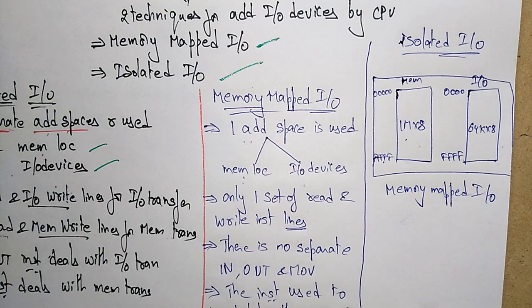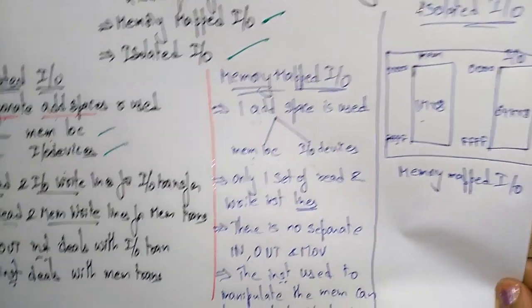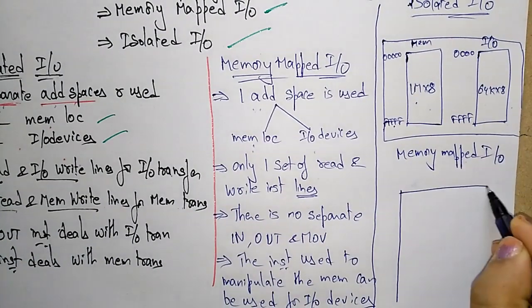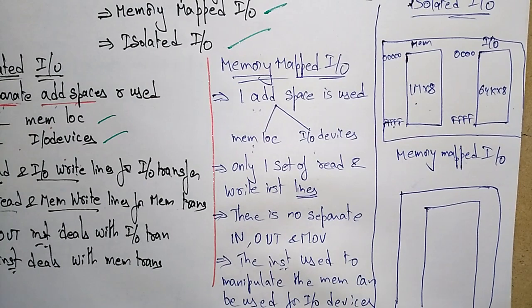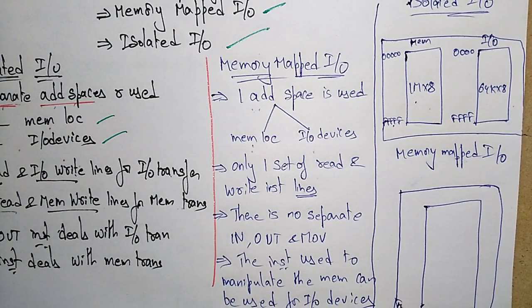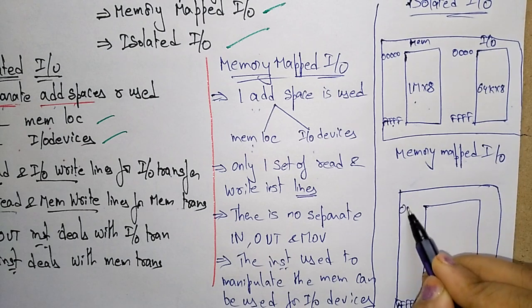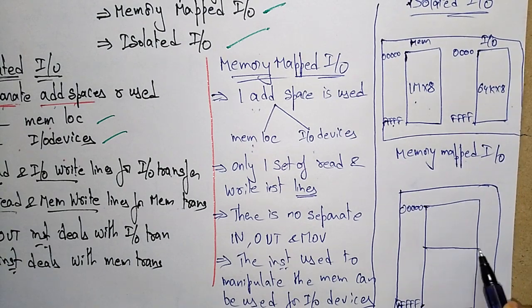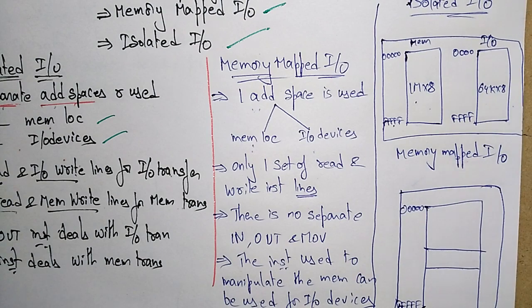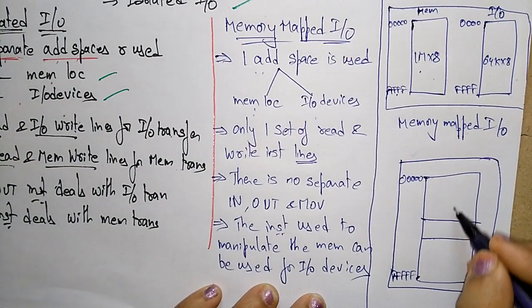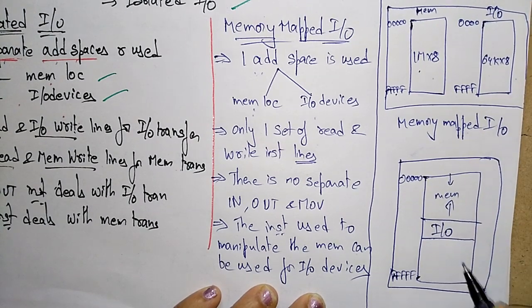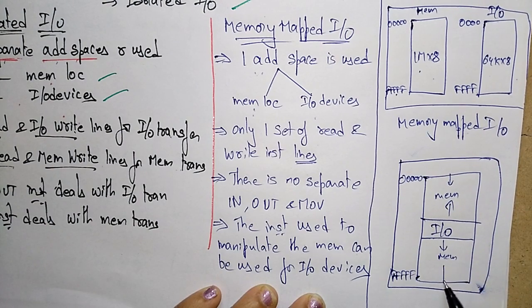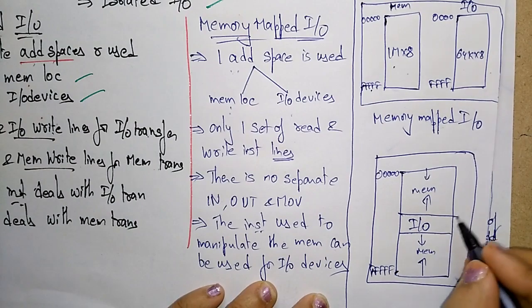Now coming to memory mapped I/O — in memory mapped I/O, we use only one address space. That single address space has to be allocated for both memory locations as well as I/O devices. The complete address space, from 0x00000000 to 0xFFFFFFFF, is used for both memory and I/O, with one portion used for memory and another portion used for I/O.